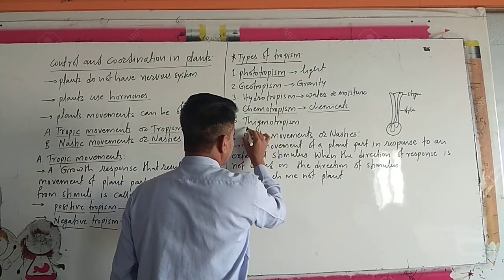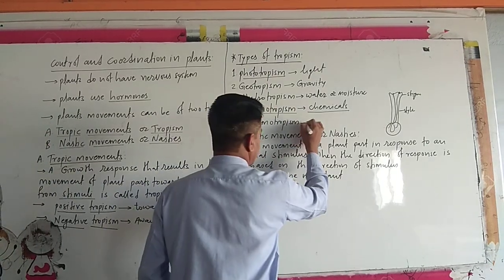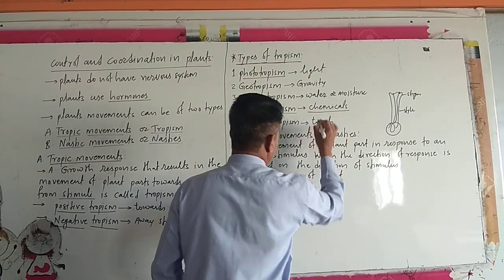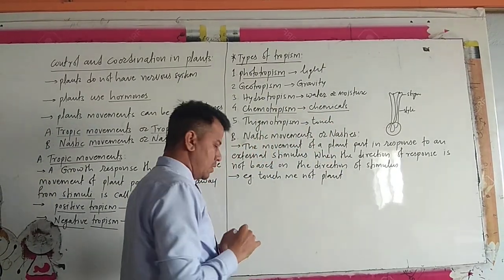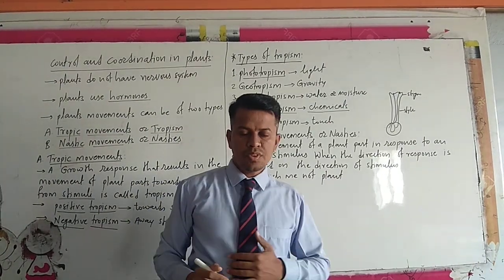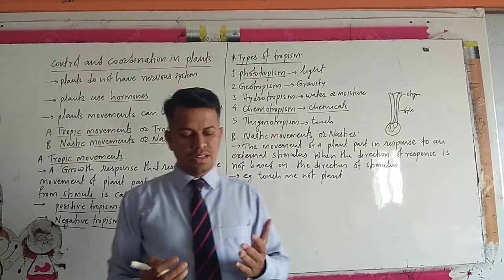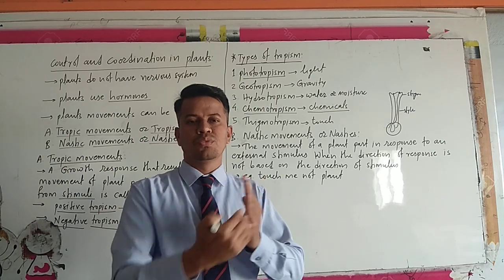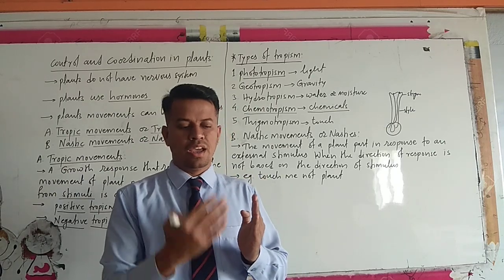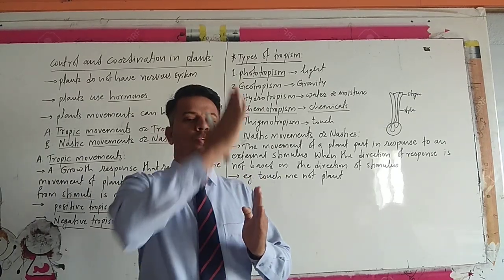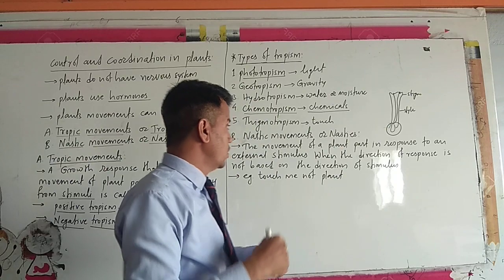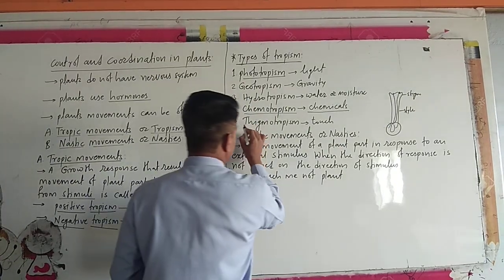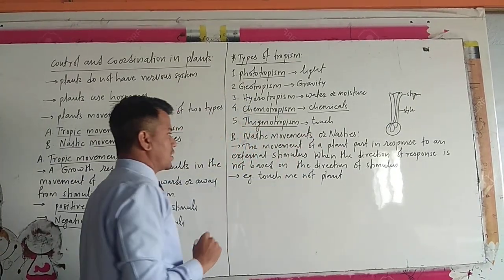The fifth type is thigmotropism. It is sensitive to touch. For example, plants showing wrapping around any obstacle and showing growth according to that. That is thigmotropism found in plants.